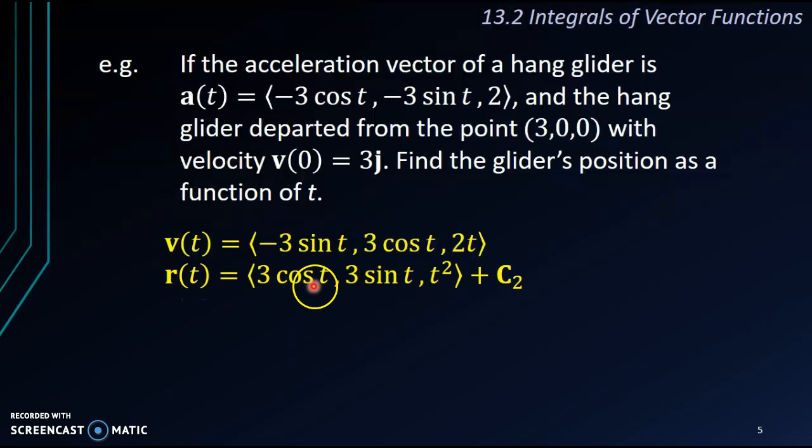We want to get r, so we have to integrate again. And we'll get this r(t), which is (3 cos t) by integrating -3 sin t, and 3 sin t from 3 cos t, and integrating 2t, you get t². So this one is the anti-derivative for this vector function. And don't forget to plus a constant.